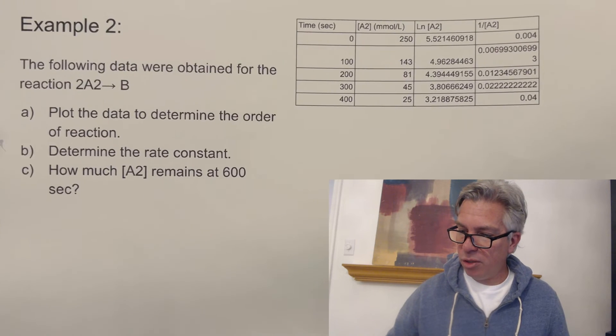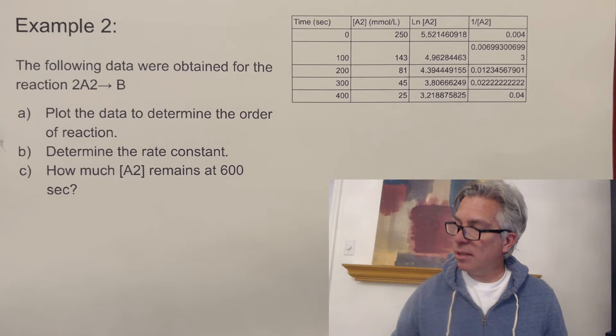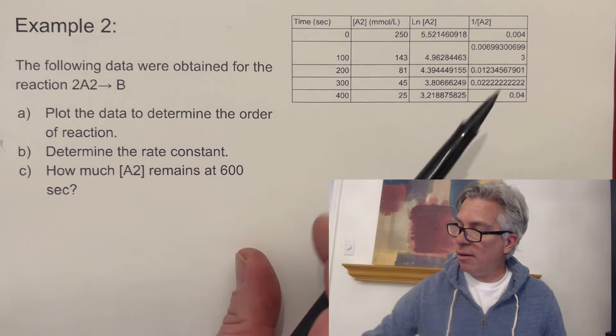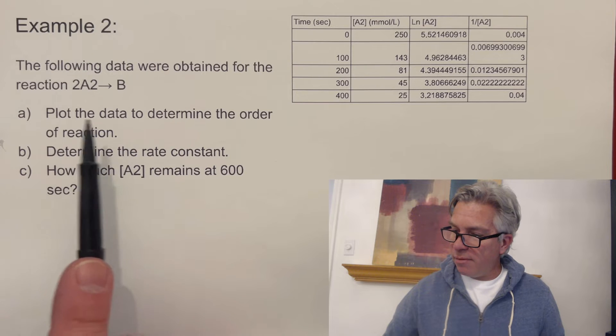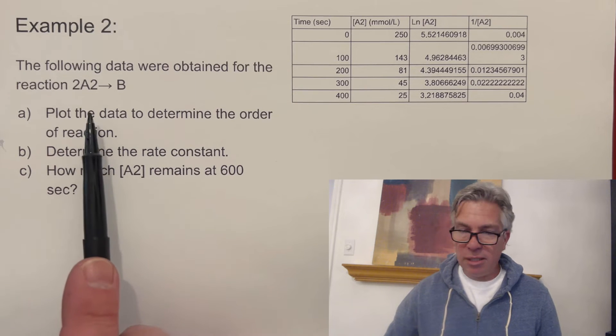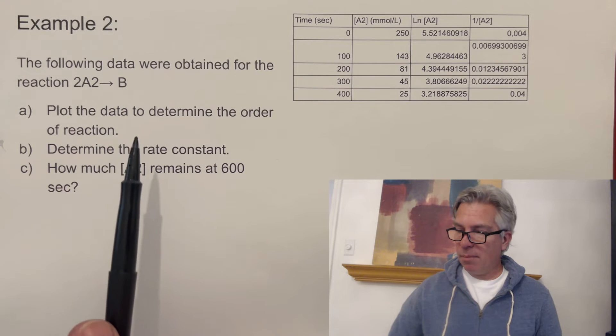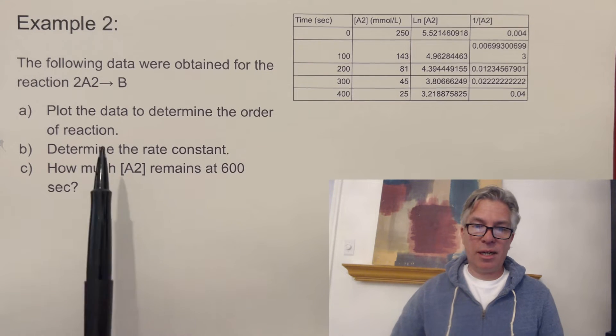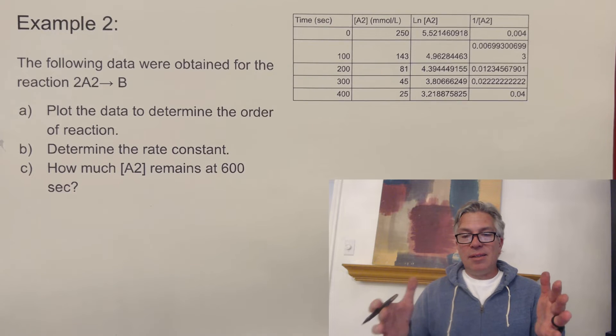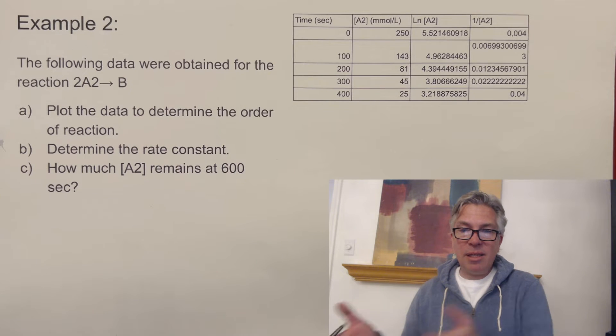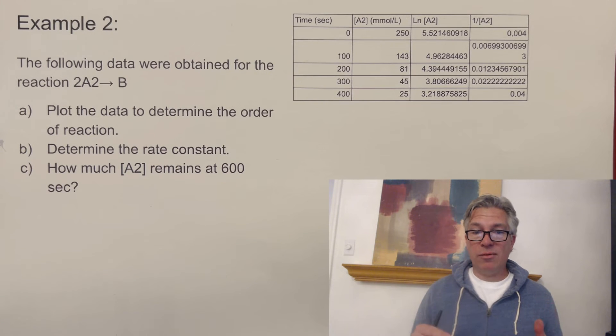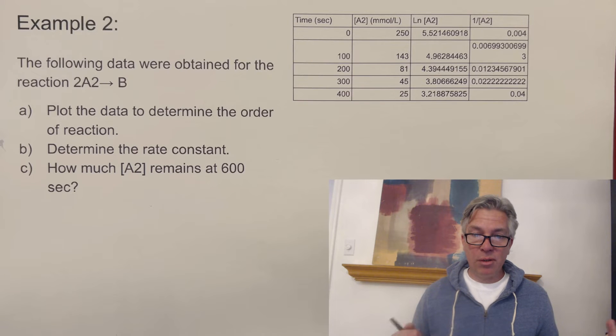Okay. So that's the first type of question. And here's our example number two. So in this case, here's my spreadsheet cut out. The following data were obtained for this general reaction, A2 makes B and two of those, two A2s, that's diatomic, makes B. Plot the data to determine the order of reaction. Now in this case, the question writer is not telling me that it's first order. I have to determine whether it's first order or second order or zero order. I don't know at this point.